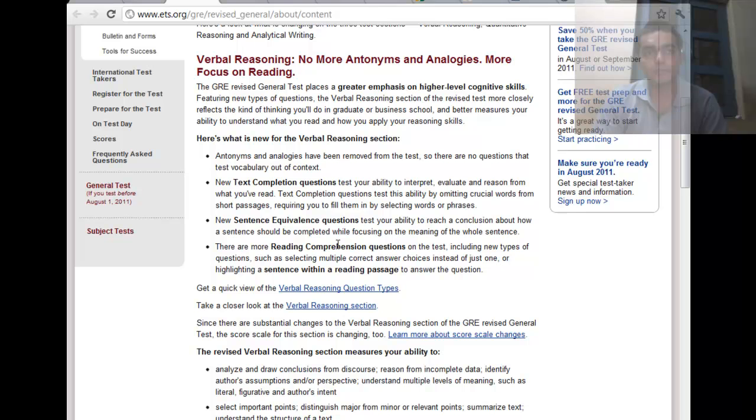The verbal section is basically divided into three sections. The first is the text completion question, then the second is the sentence equivalence section and the third is the reading comprehension question. Now let's look at each type of them.